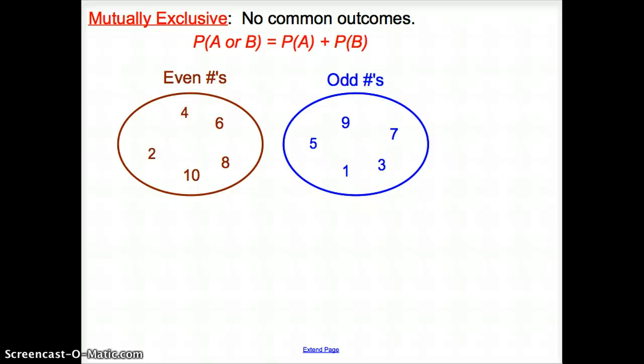So next vocab word is mutually exclusive, right? Mutually exclusive means that there are no common outcomes. When there are no common outcomes between our probability, we just add them together. So say this event here was we were picking even numbers and odd numbers. Since even numbers and odd numbers do not share anything, it is mutually exclusive. So then we would just take the probability of this happening, and the probability of this happening, and just add them together. So mutually exclusive, no common outcomes. That's key. Mutually exclusive, no common outcomes.